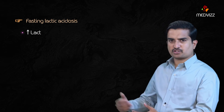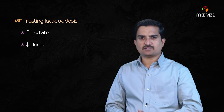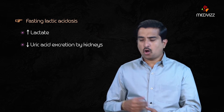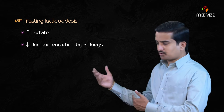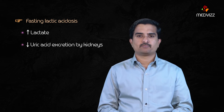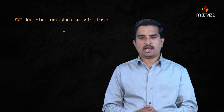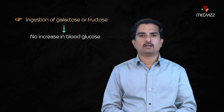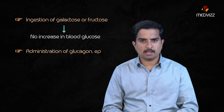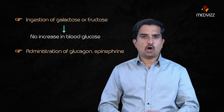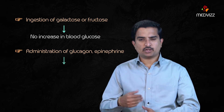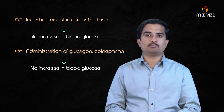Fasting lactic acidosis is seen in Von Gierke's disease, with increased production of lactate and decreased lactic acid excretion by the kidneys. Ingestion of galactose or fructose shows no increase in blood glucose. Administration of glucagon, epinephrine, or other gluconeogenic stimuli also results in no increase in blood glucose.